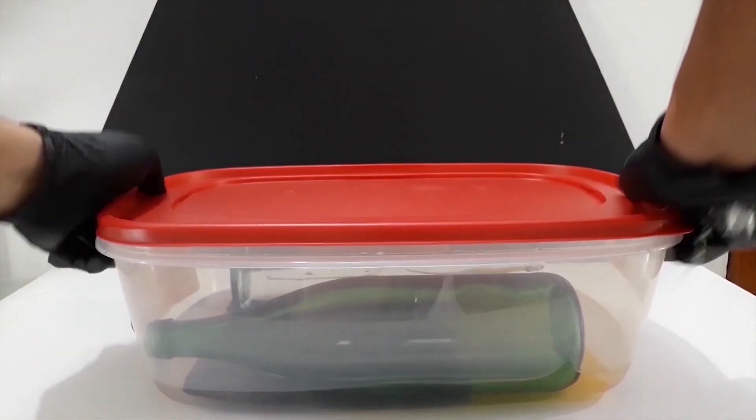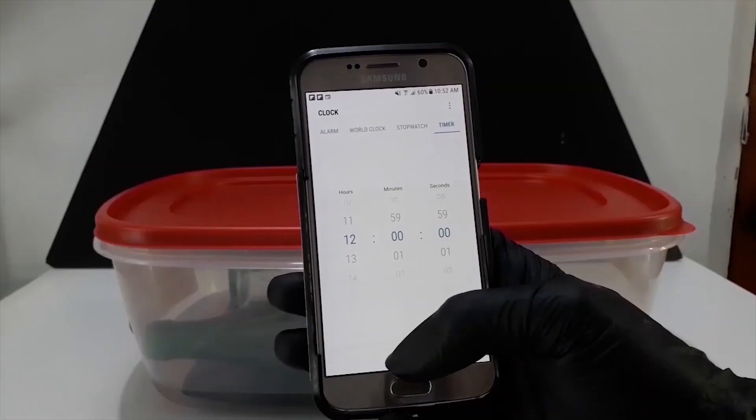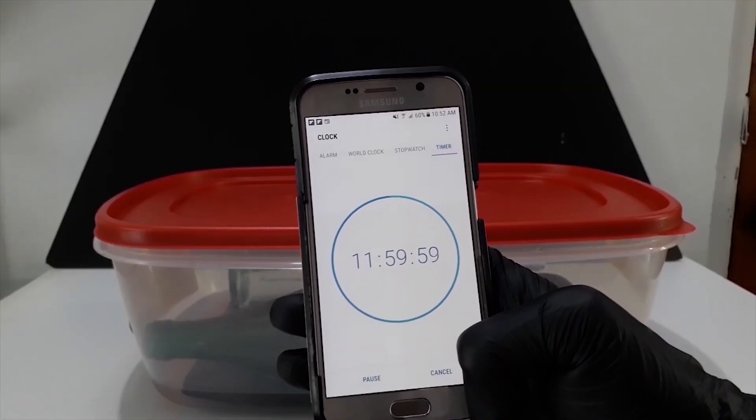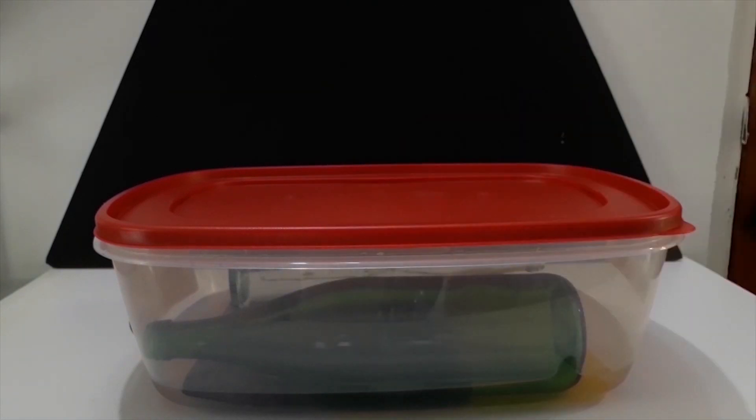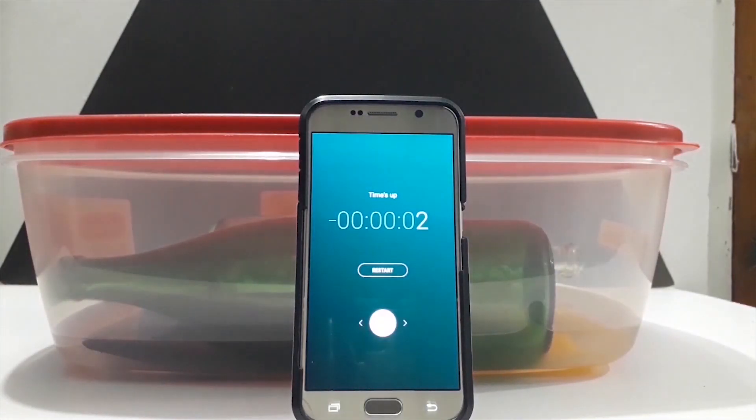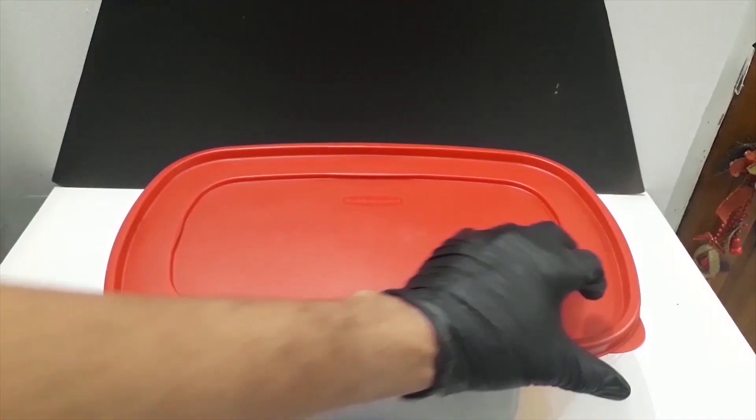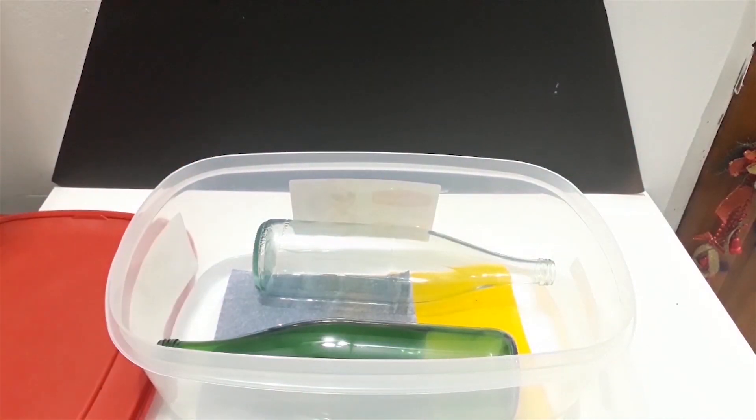A lid was then placed on the container and it is left to sit for 12 hours. After 12 hours, the dechlorinated PVC resin cloth was removed from the solution and rinsed with fresh water.